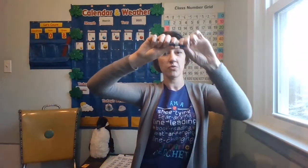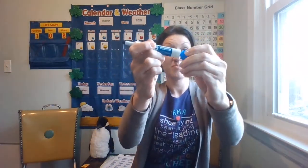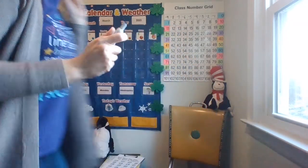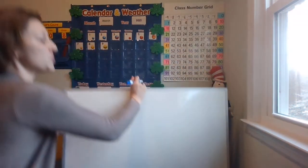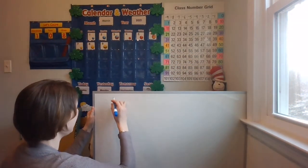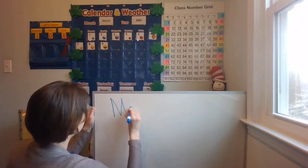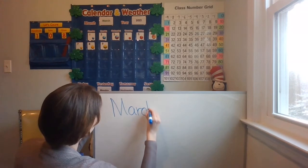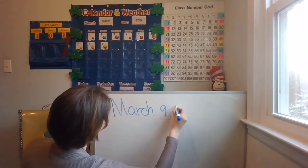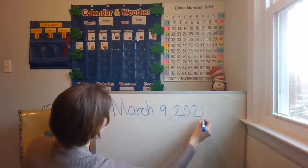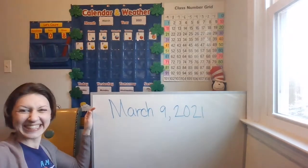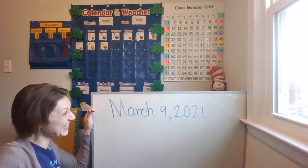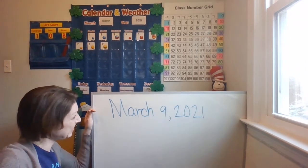Okay, kindergartners, go ahead and get your whiteboard and your dry erase marker. Remember, the cap is going to go on the bottom so you don't lose it. And let's write the date — March 9th, 2021. Start with your capital M. March 9th, 2021. Go ahead and write that down. And when you're done, put your cap back on your marker. Great job, mathematicians! Hurry up and write it down so we can continue.